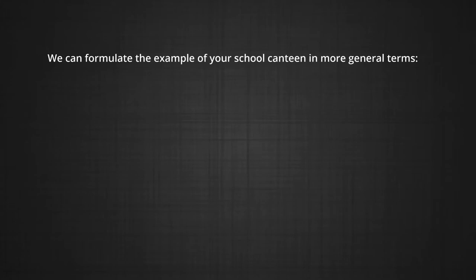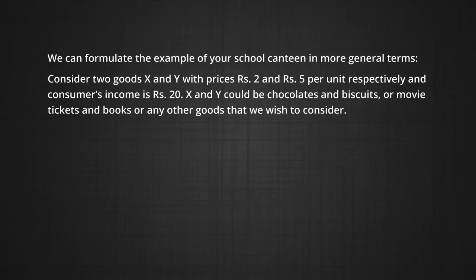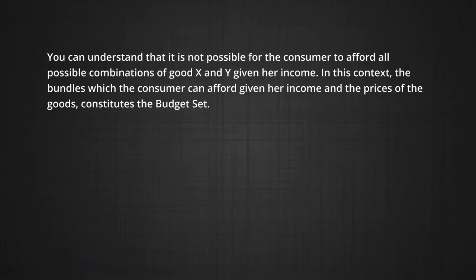We can formulate the canteen example in more general terms. Consider two goods, X and Y, with prices rupees 2 and rupees 5 per unit respectively, and a consumer's income of rupees 20. X and Y could be chocolates and biscuits, movie tickets and books, or any other goods. We pick two goods because that allows us to represent the problem on a two-dimensional diagram, and the logic can be easily extended to many goods. A consumer cannot afford all combinations of X and Y given her income. The bundles which a consumer can afford, given her income and the prices of those goods, constitute the budget set.